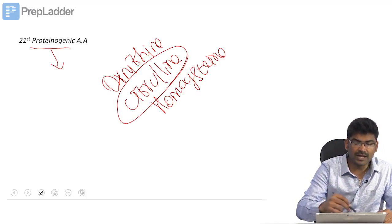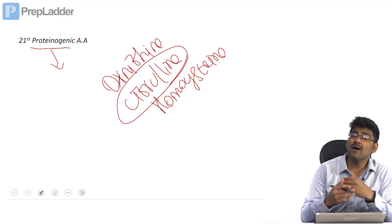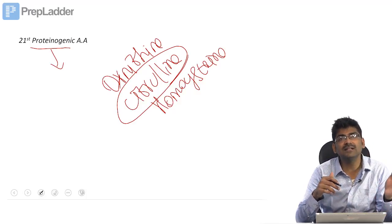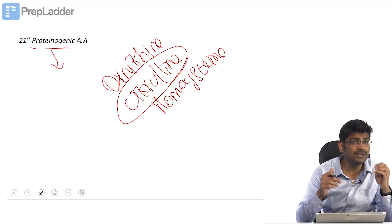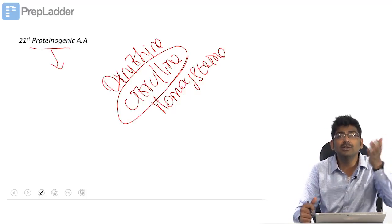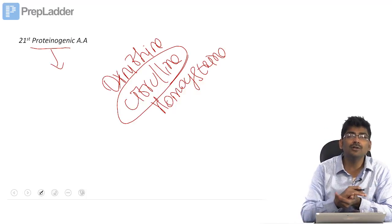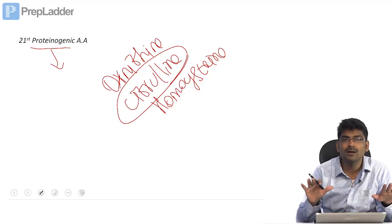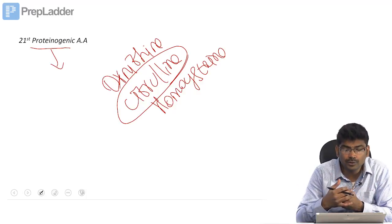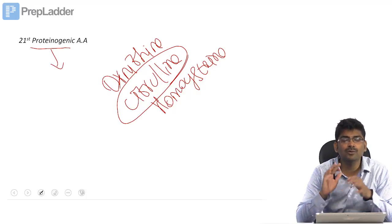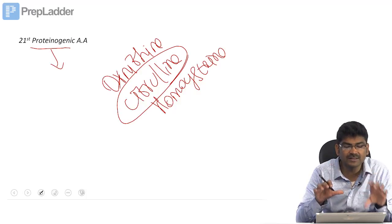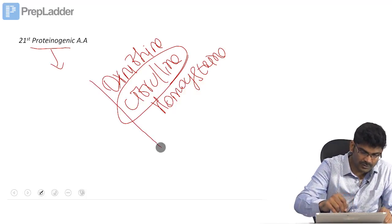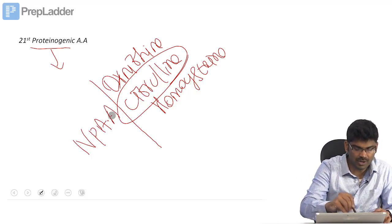One can argue that citrulline is found in proteins because of post-translational modification. That does not mean that it is a proteinogenic amino acid. Proteinogenic amino acids are incorporated into the proteins, they are not due to post-translational modification. Citrulline is found in protein but it arises due to post-translational modification. It does not contain any codon specific for citrulline or any specific tRNA. So these are non-protein amino acids.